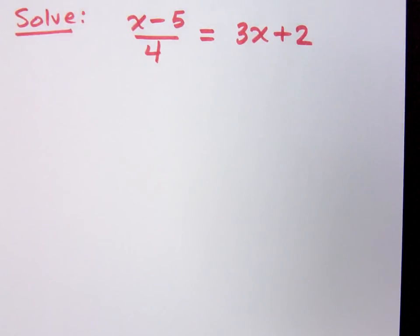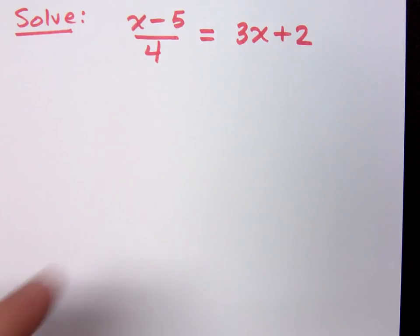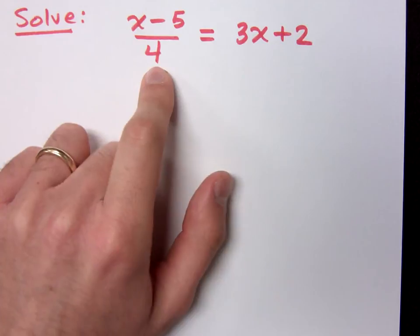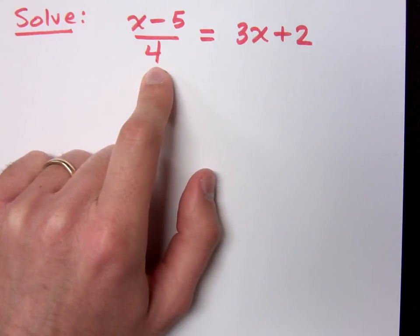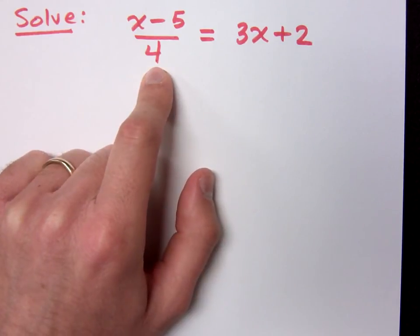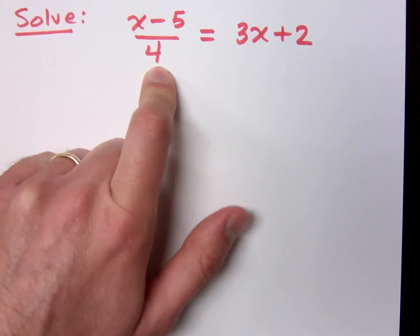What do you think you would do in this problem? Multiply 4 by both sides. Multiply both sides by 4? Right? When I look at this, there's an issue that I have, and the issue comes with this division by 4. Is there a way that I can undo that? The opposite of dividing by 4 is what? Multiplying by 4.